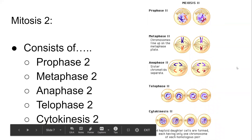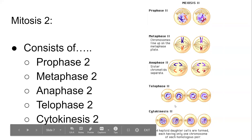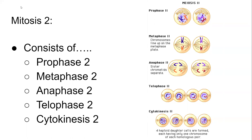Meiosis 2 is the most similar to mitosis in general because you have the exact same things happening. You have prophase, where the nuclear membrane disappears; spindle fibers and centrioles form. In metaphase 2, your chromosomes line up on the metaphase plate. In anaphase 2, your sister chromatids are separating just as in mitosis. And in telophase 2 and cytokinesis 2, the exact same thing is happening as in mitosis.